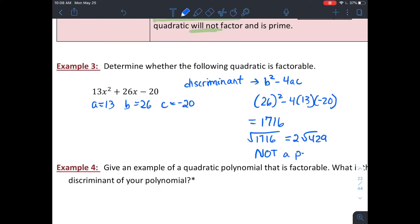So if your discriminant is not a perfect square, then that means that your quadratic is not able to be factored. It's prime. So sometimes that's handy to check before you go to the work of attempting to factor. If you look at your discriminant, you can know if it's prime or not.